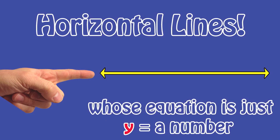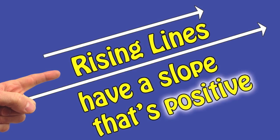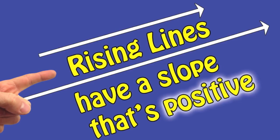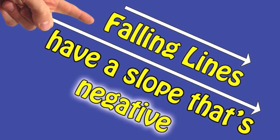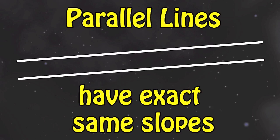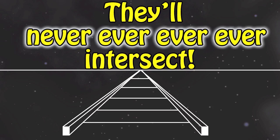We've got horizontal lines, whose equation is just Y equals a number. Vertical lines, whose equation is just X equals a number. Rising lines have a slope that's positive. Falling lines have a slope that's negative. Parallel lines have the exact same slopes.